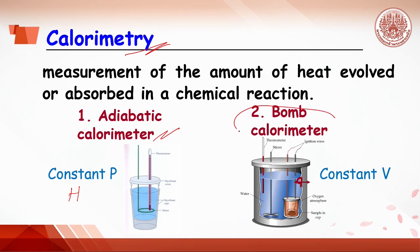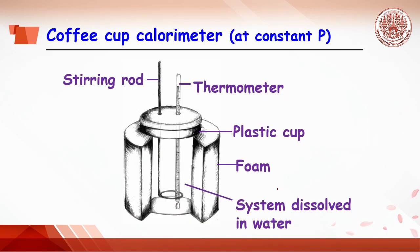The second type is a bomb calorimeter, where the reaction takes place in a small chamber of constant volume surrounded by water. Normally, it is used to determine heat of combustion, in which products are in the form of gas phase. In this experiment, a coffee cup calorimeter is selected to measure the heat in an acid-base reaction, or heat of neutralization.